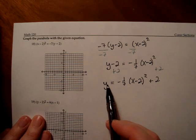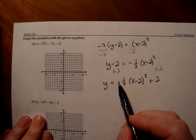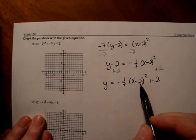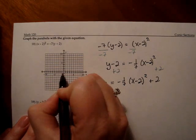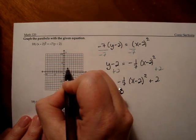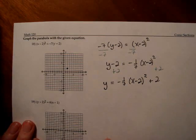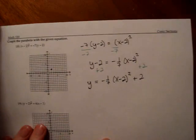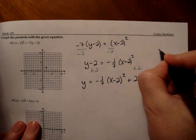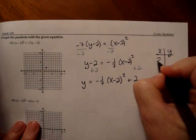And so my equation will be y equals negative 1/7th times the quantity x minus 2 squared plus 2. So now this is solved for y. I know this parabola is going to open downward, since that's negative. The vertex is at 2,2, so let's go over to 2,2.